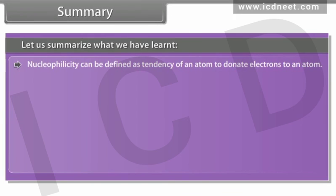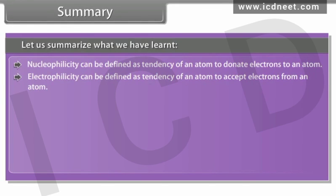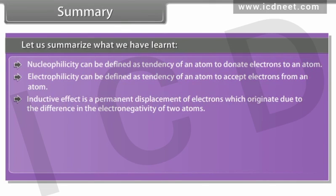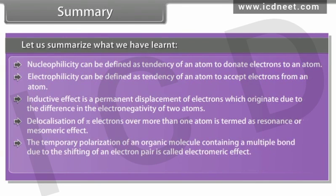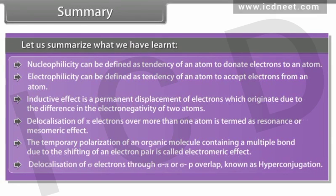Nucleophilicity can be defined as the tendency of an atom to donate electrons to an atom. Electrophilicity can be defined as the tendency of an atom to accept electrons from an atom. Inductive effect is a permanent displacement of electrons due to the difference in electronegativity of two atoms. Delocalization of pi-electrons over more than one atom is termed as resonance or mesomeric effect. The temporary polarization of an organic molecule containing a multiple bond due to shifting of an electron pair is called electromeric effect. Delocalization of sigma-electrons through sigma-pi or sigma-p overlap is known as hyperconjugation.